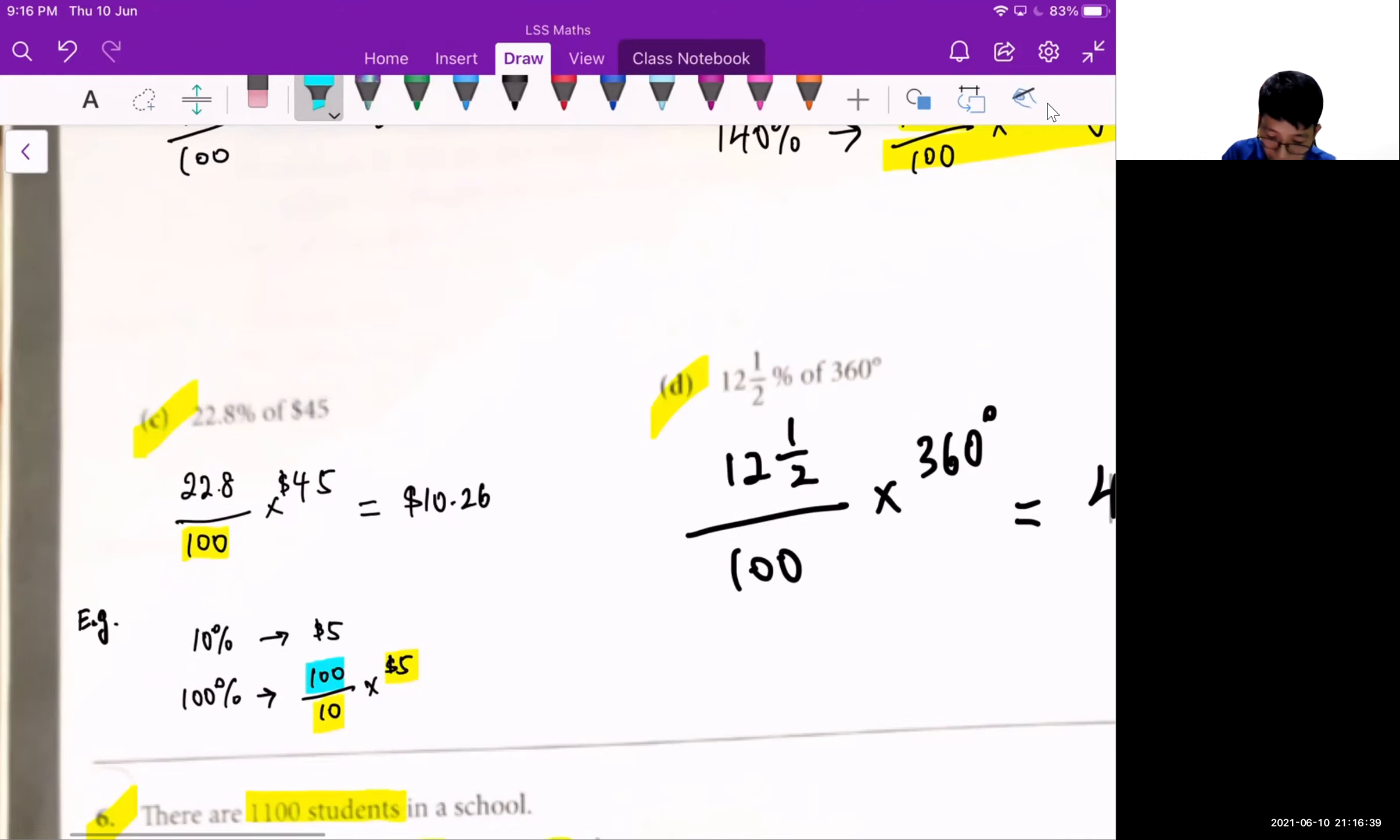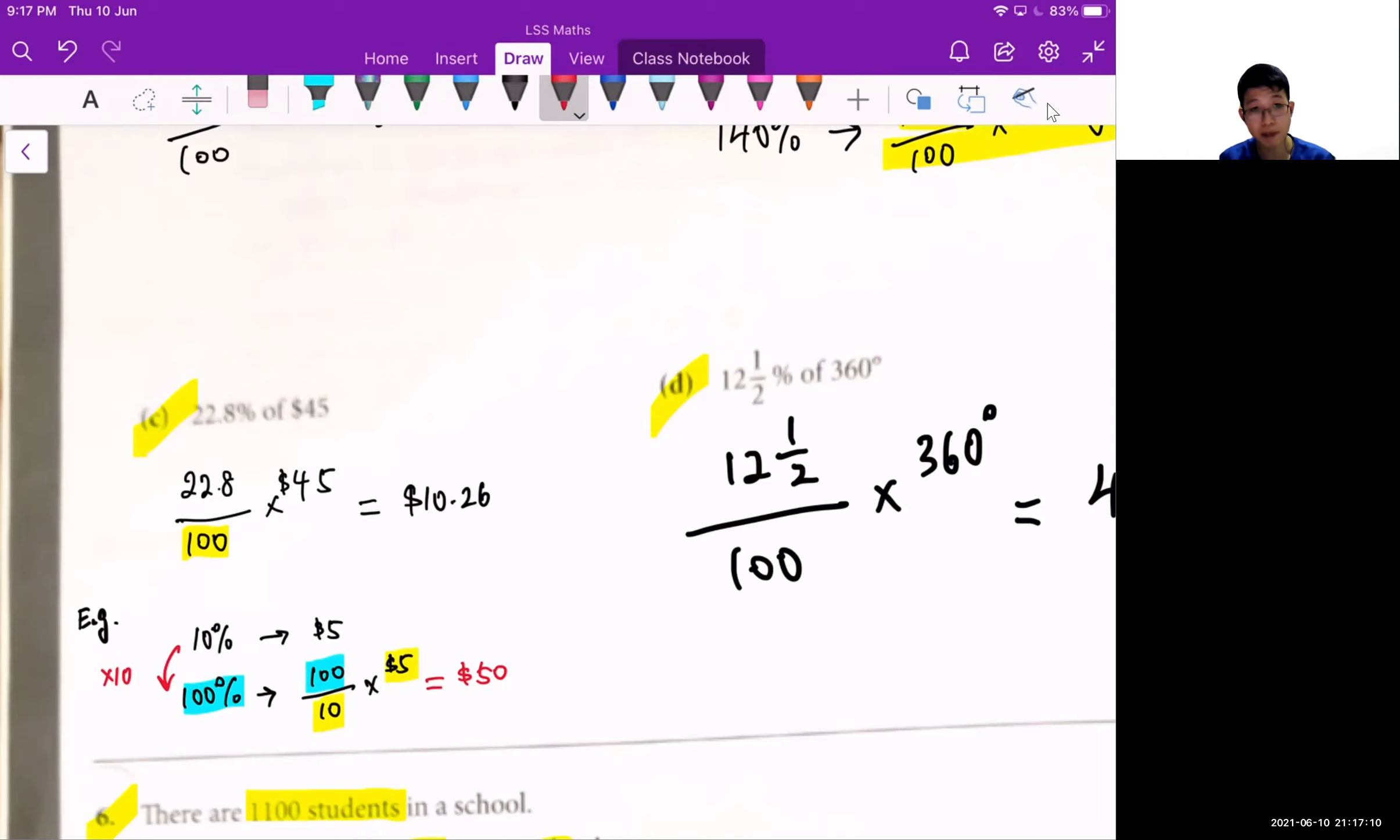So the percentage at the bottom will always be equivalent to the quantity that is representing. And the number above, this one here, it will be depending on what percentage that I want to find. So if I want to find 100%, I put here as 100. If I want to find 20%, I put there as 20. When I work it out, it will be $50. So you must be wondering, why does this work?